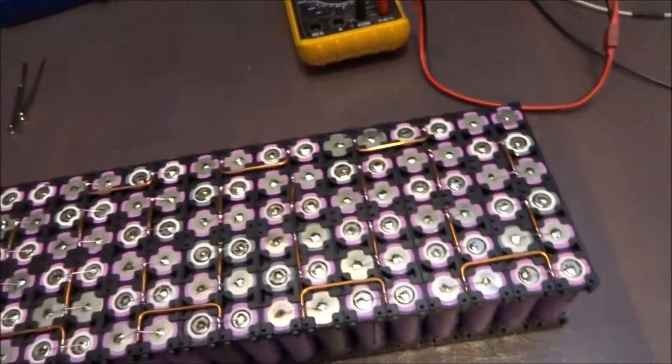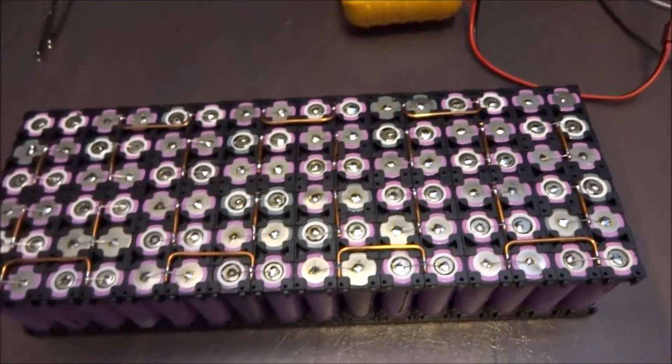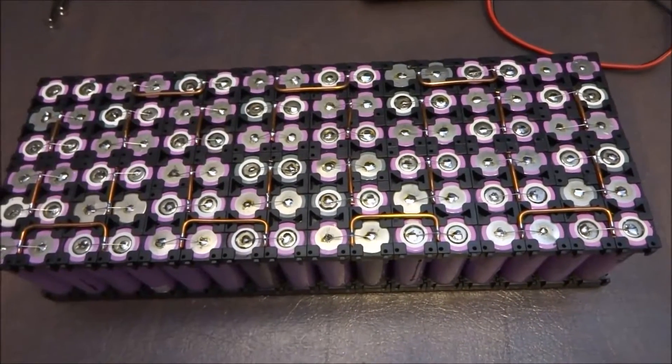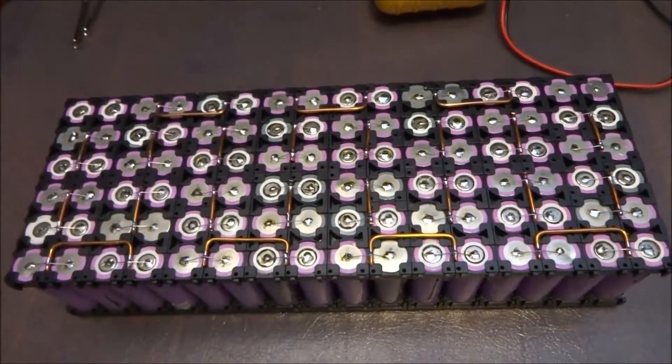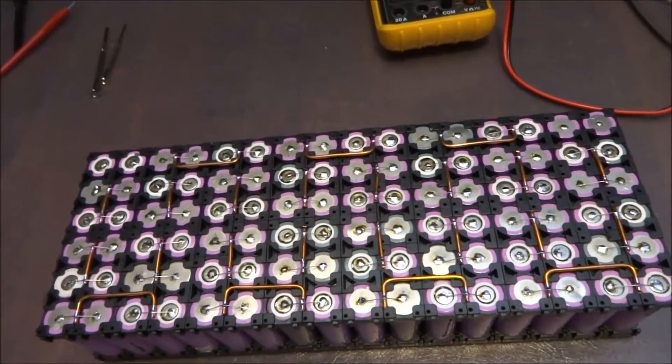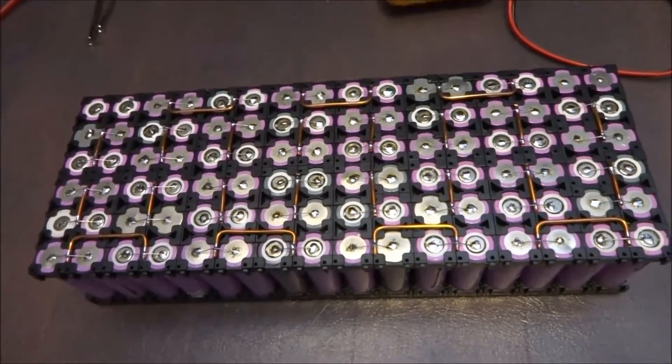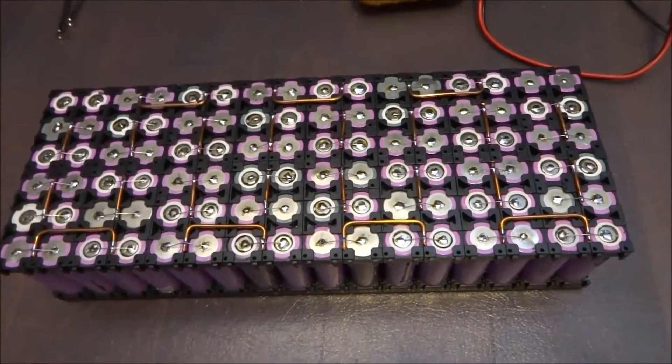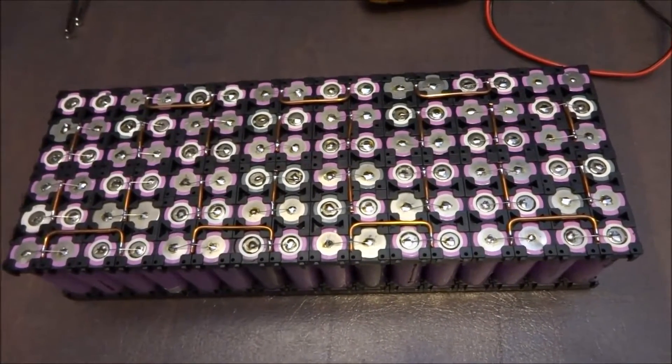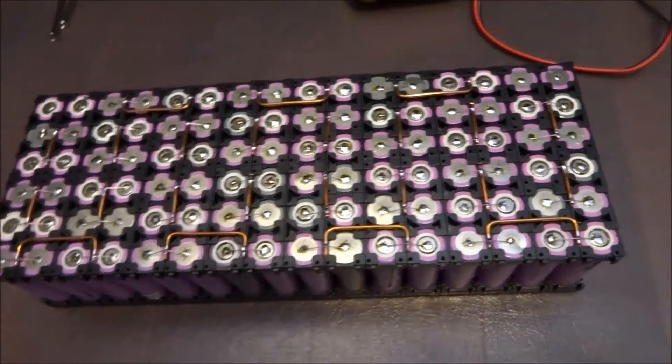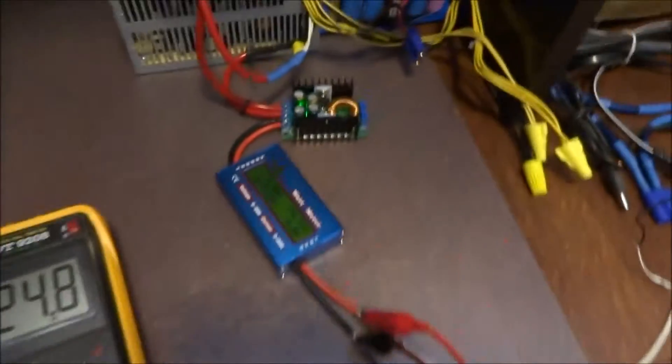And then once they're all charged, I should obtain a total voltage on this pack of 198. And once I put this one in series with my other pack, I'll get the 396 volts that I require to parallel in with the Nissan Leaf.